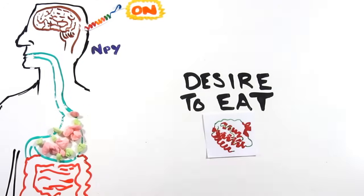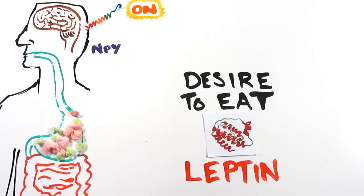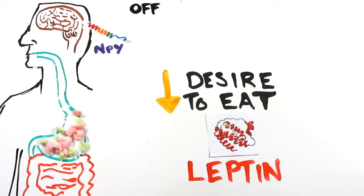Conversely, after eating, a different hormone, leptin, is released from the stomach and fat cells and interferes with NPY, further turning off the desire to eat and making you feel full.